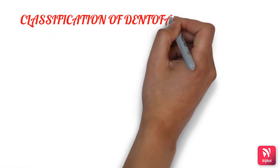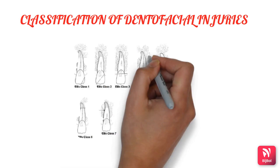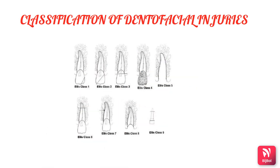According to the classification given by Ellis and Davis: Class 1 is crown fracture involving only enamel; Class 2 is crown fracture without pulp involvement; Class 3 is crown fracture involving the pulp; Class 4 is a traumatized tooth becoming non-vital; Class 5 is tooth lost due to trauma; Class 6 is fracture of the root with or without crown fracture.